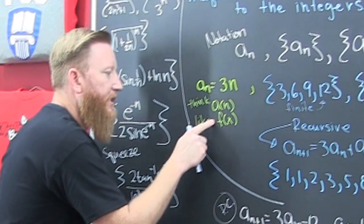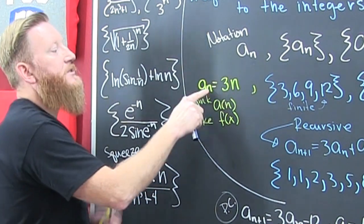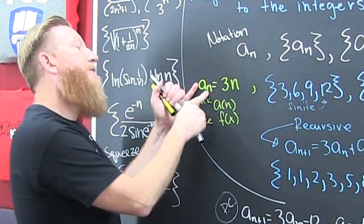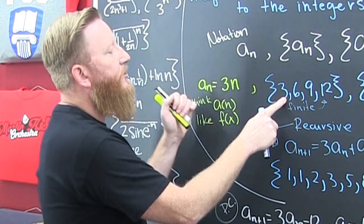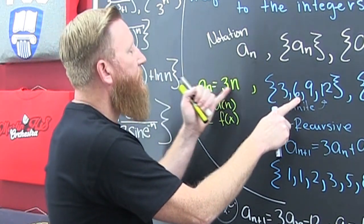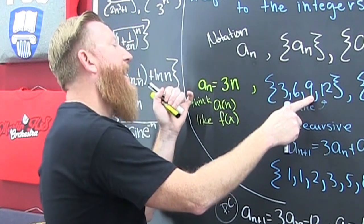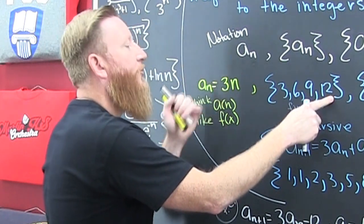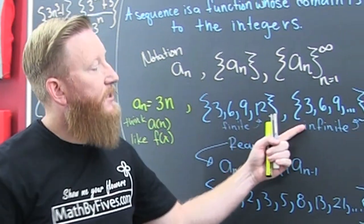So if you were looking for the first four terms, that would be: a₁ because 1 times 3 is 3; a₂ because 2 times 3 is 6; a₃ because 3 times 3 is 9; and a₄ because 3 times 4 is 12.